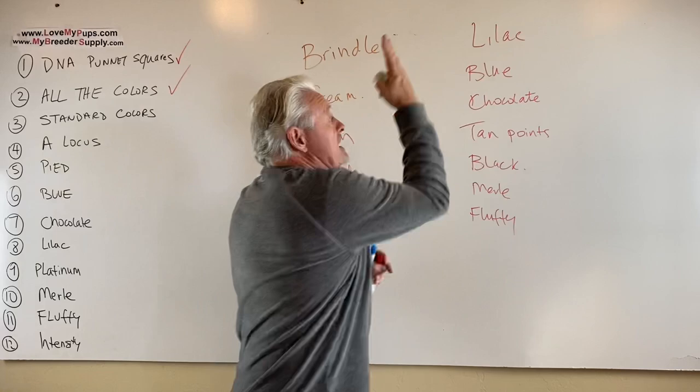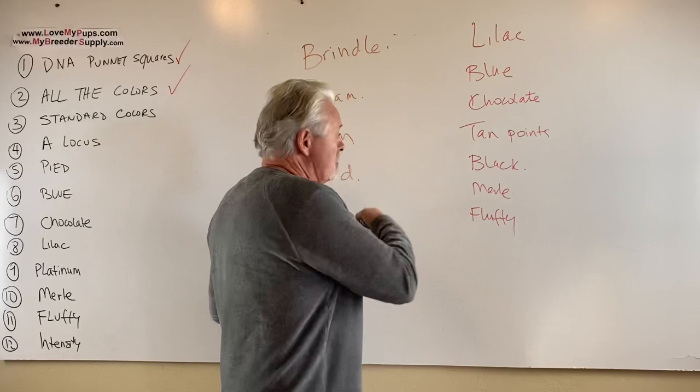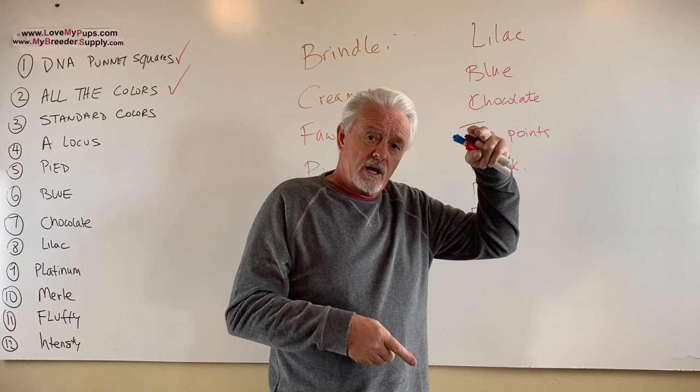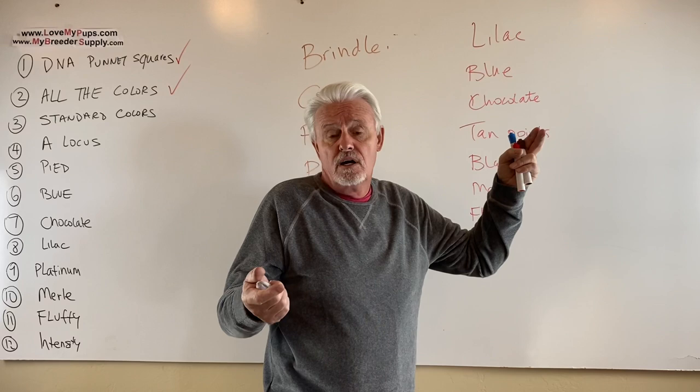It doesn't mean it's not an AKC dog — you can get AKC registration on any of these colors, you just can't show them. So when people say you can't AKC register a lilac dog, you absolutely can. When you look at the application form and you've got a lilac puppy, lilac is not a choice on there, so you can't click lilac, but it's still an AKC dog and you have to choose an appropriate color that defines what that dog is.